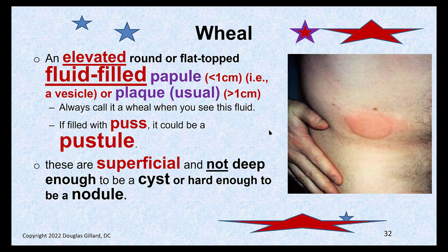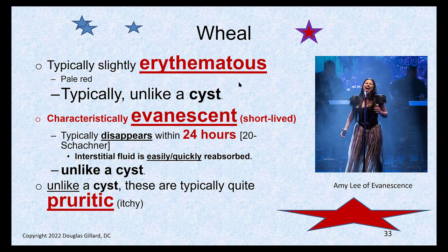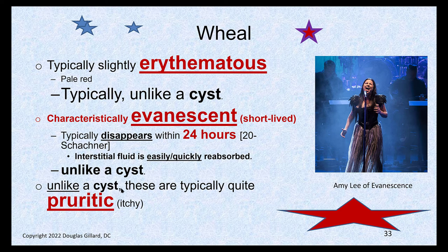Wheals are superficial, so they're not deep enough to be a cyst and not hard enough to be a nodule. The other key is they don't live very long — they're evanescent, meaning short-lived. They don't last more than 24 hours or so; sometimes a couple of hours and they're gone. A cyst would never do that — a cyst stays until you get it removed. And unlike a cyst, wheals are very itchy. That's another way to differentiate from a cyst. Evanescent — like evanescence, Amy Lee, kind of a one-hit wonder — that's how I remember it.